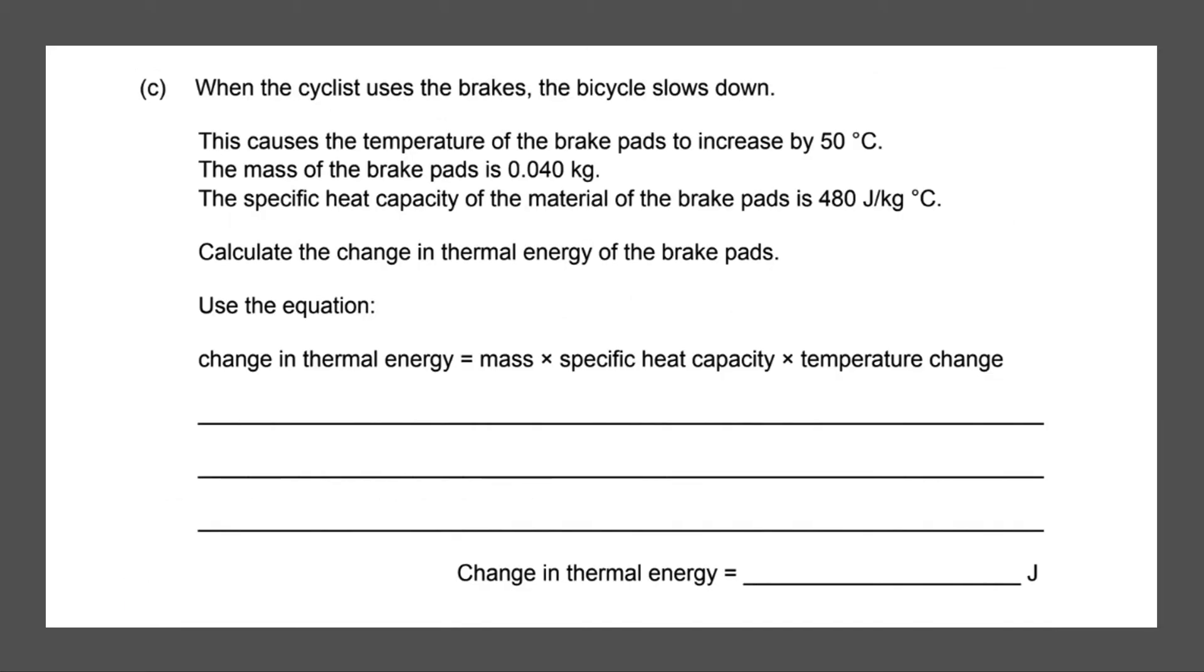Okay, next question. When the cyclist uses the brakes, the bicycle slows down. This causes the temperature of the brake pads to increase by 50 degrees Celsius. The mass of the brake pads is 0.04 kilograms. The specific heat capacity of the material of the brake pads is 480 joules per kg per degree Celsius. Calculate the change in thermal energy of the brake pads.